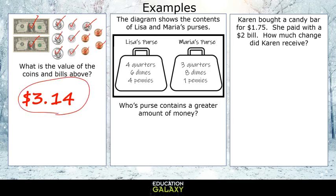Our next problem says the diagram shows the contents of Lisa and Maria's purses, and we're trying to figure out whose purse contains a greater amount of money. Alright, Lisa — let's see what you got. She has four quarters, so four quarters is one dollar. And then six dimes is sixty cents. And four pennies is four cents. So we have one dollar, and sixty plus four is sixty-four — that's one dollar and sixty-four cents.